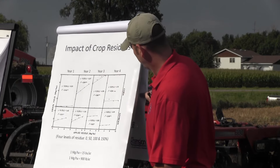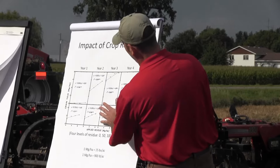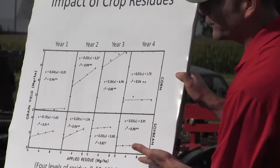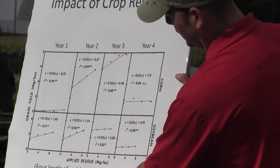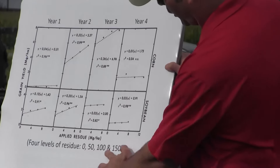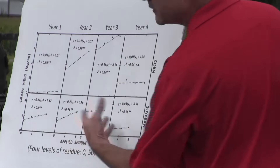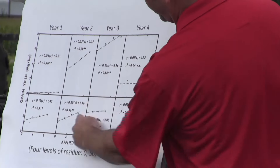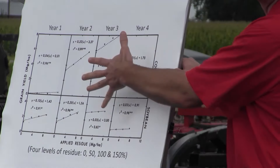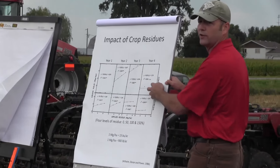Here's some data from a study just west of us in Nebraska. In a four-year study looking at corn and soybean yield, they had four levels of residue: zero (all removed), 50%, 100%, and 150% (where the extra 50% was added on top). In some years there were no differences, but in other years there was an increasing trend in yield with increasing amount of residue on the surface.